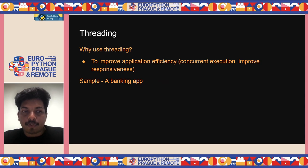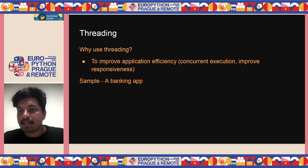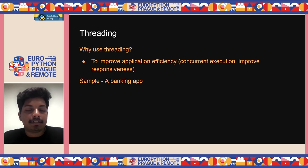Why use threading? To improve your application efficiency by using concurrent execution and improve your responsiveness. To make this clearer, I'm going to show you an example of a simple banking app.